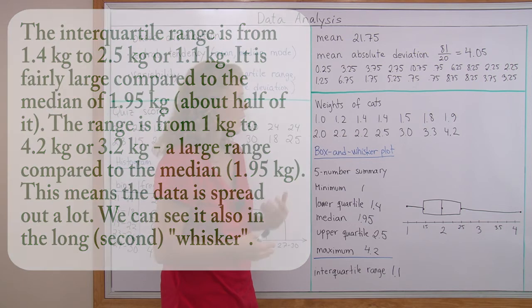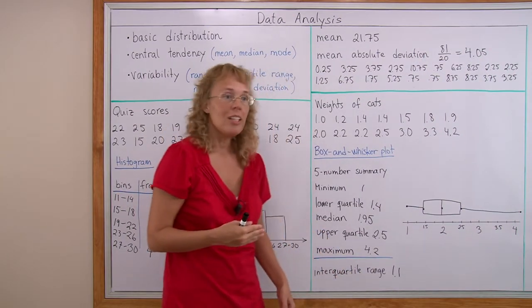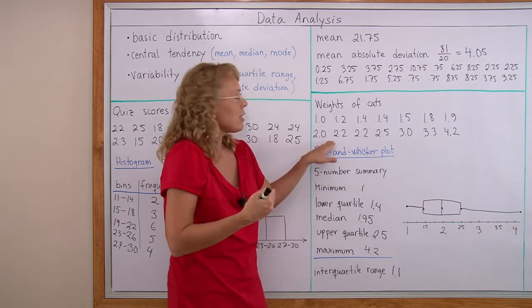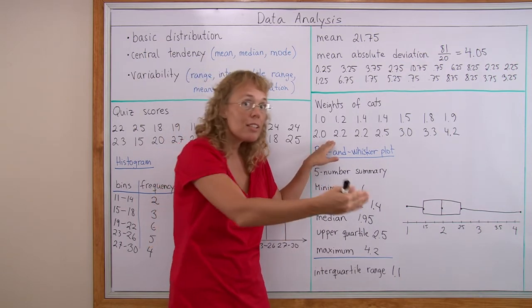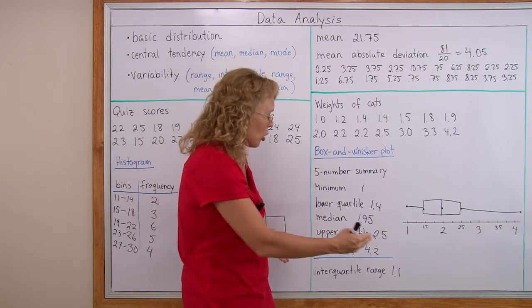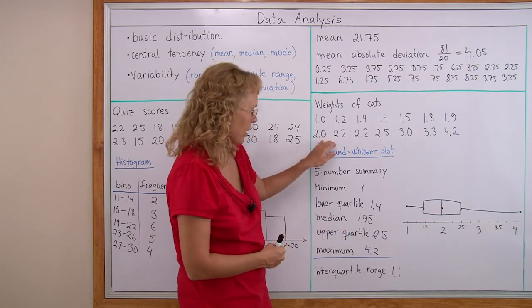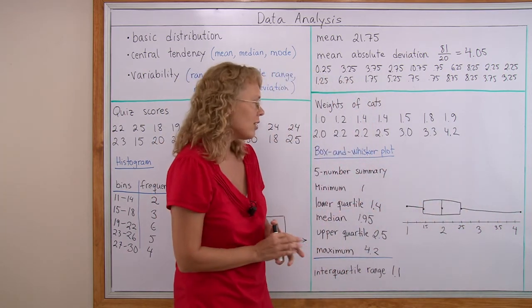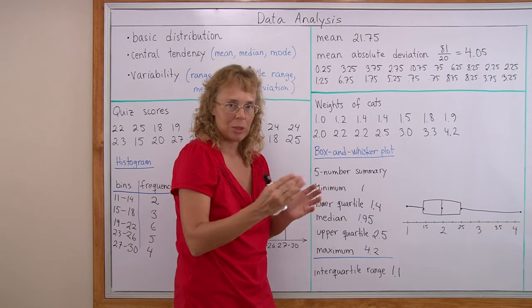The interquartile range is very important when we compare to another set of data, maybe the weights of these same cats sometime later after they've been fed or something. And then we can compare if the data is still very spread out, like it is here, or if it is less spread out.